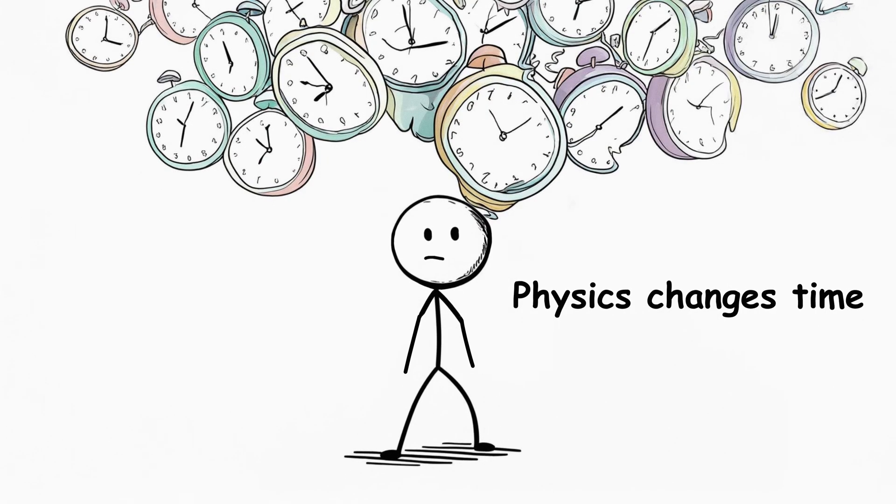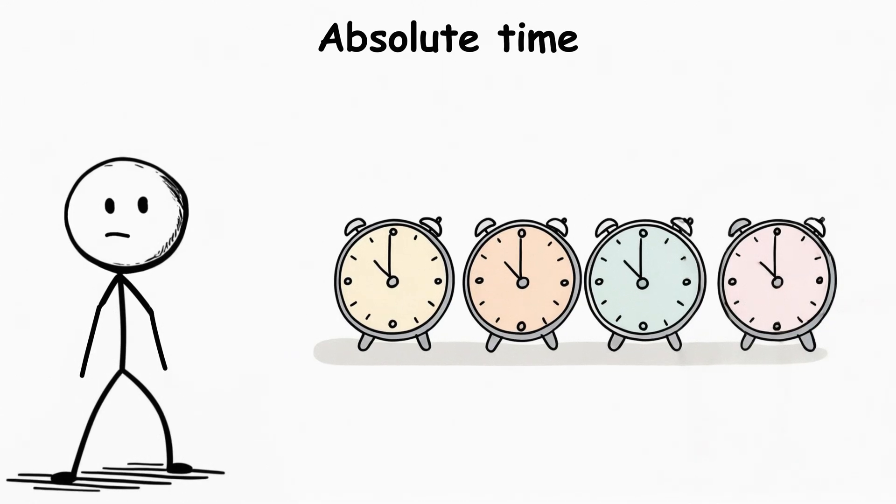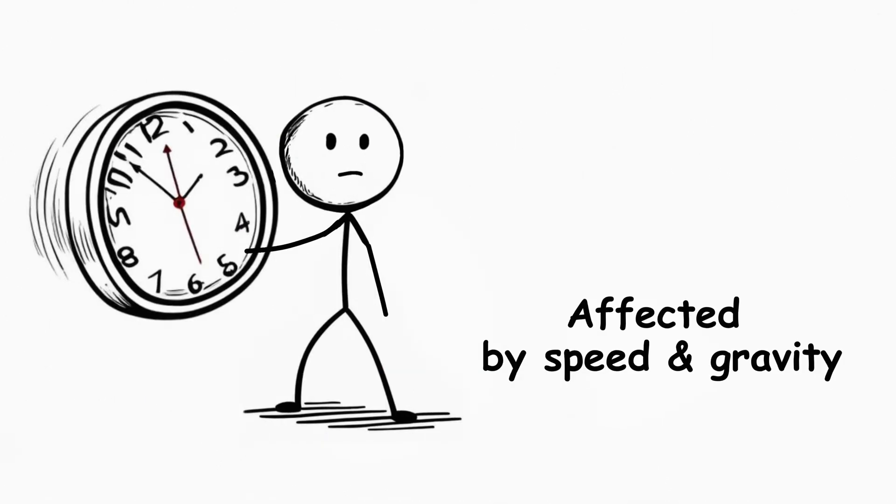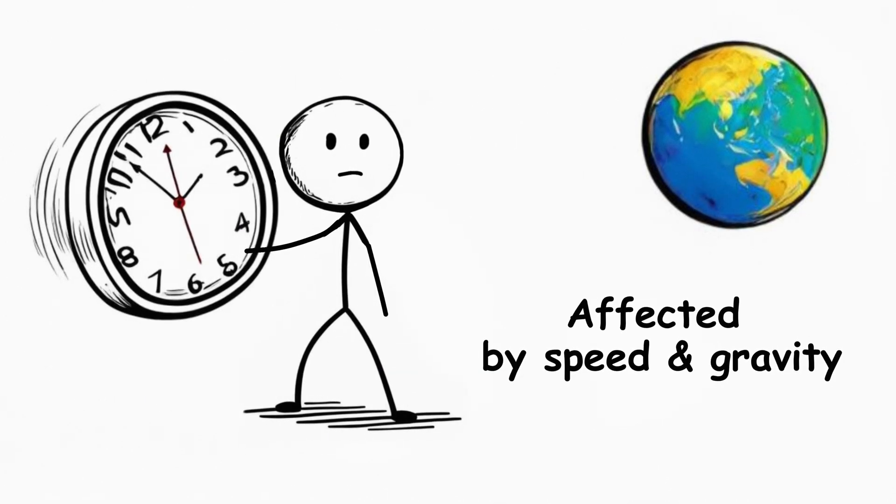20th century physics completely changed the view of time. Before Einstein, time was considered absolute, the same for everyone and everywhere. But the theory of relativity showed time is a flexible part of reality. It stretches, contracts, depends on speed and gravity.